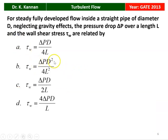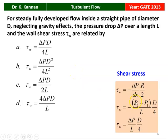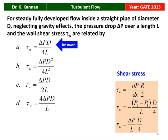Next question from the 2013 question paper: For steady fully developed flow inside a straight pipe of diameter D, neglecting gravity effects, the pressure drop ΔP over length L and the wall shear stress τw are related by — four options given. The correct answer is option A: τw = ΔP·D/(4L), which is the correct relation between shear stress and pressure drop.